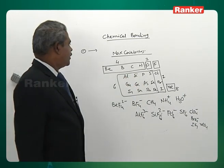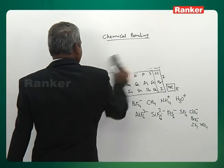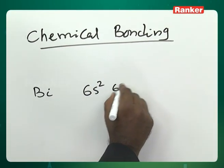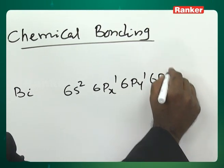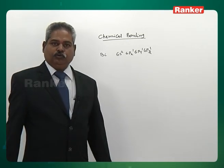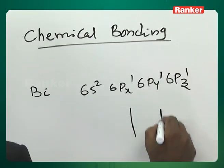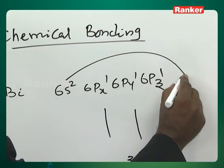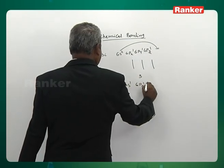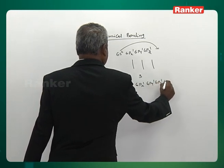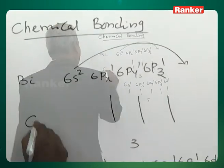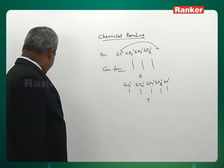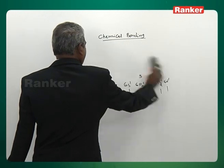Bismuth: configuration 6s2, 6px1, 6py1, 6pz1. It has three unpaired electrons and can form three bonds. In its excited state (6s1, 6px1, 6py1, 6pz1, 6d1), bismuth can theoretically form five bonds. However, bismuth is not willing to form five bonds — bismuth prefers BiCl3 over BiCl5.